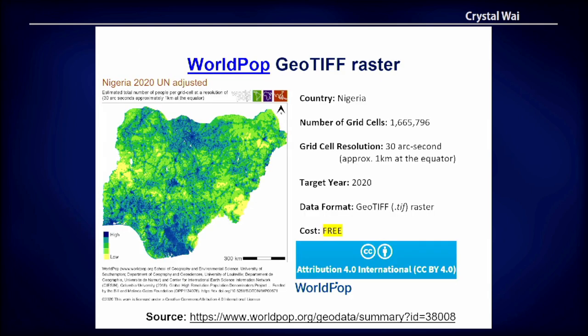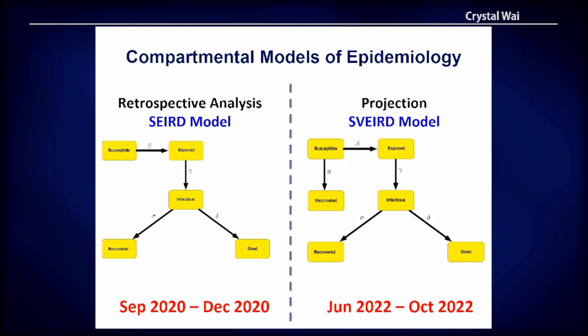Here we're using Nigeria as a test case, with about 1.6 million grid cells containing 210 million citizens. The simulation can perform two aspects: a retrospective analysis and a projection into the future. Our date ranges are September 2020 to December 2020, and June 2022 to October 2022.